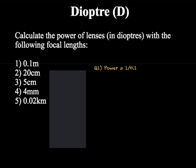When we do this we will end up with a power in diopters of 10 diopters. I now want you to pause the video and calculate the answers to the remaining 4 questions. Remember to convert your focal length into metres.